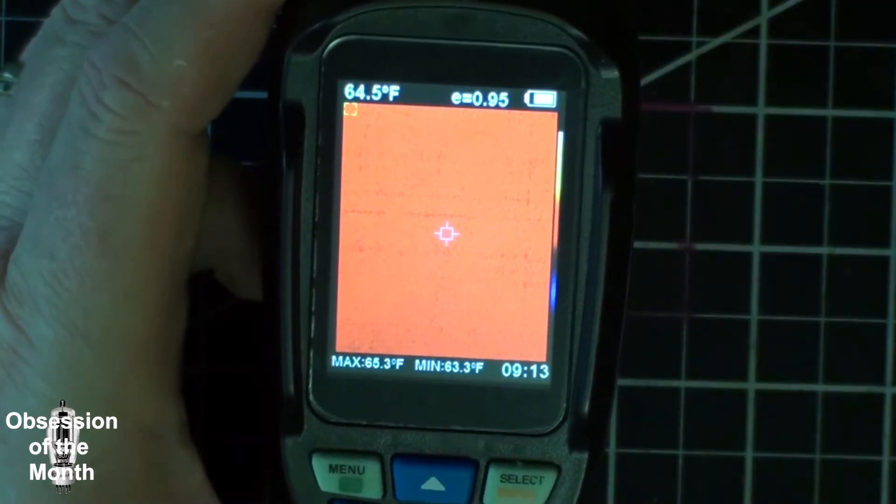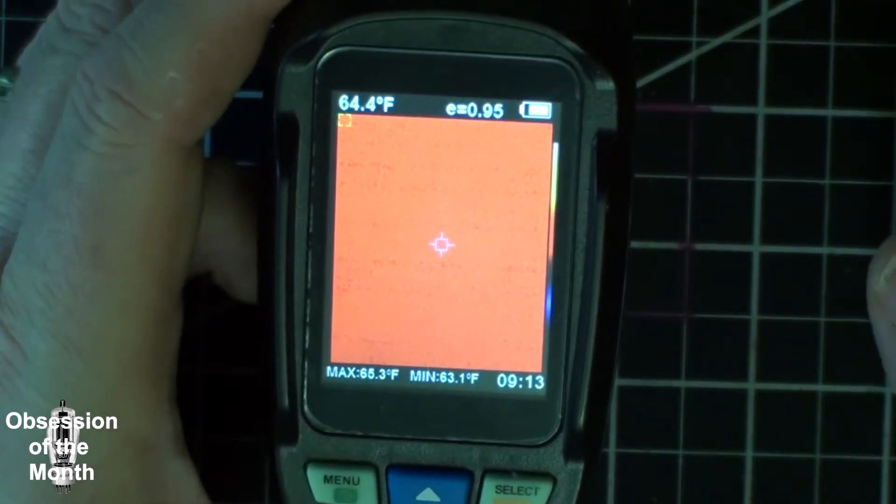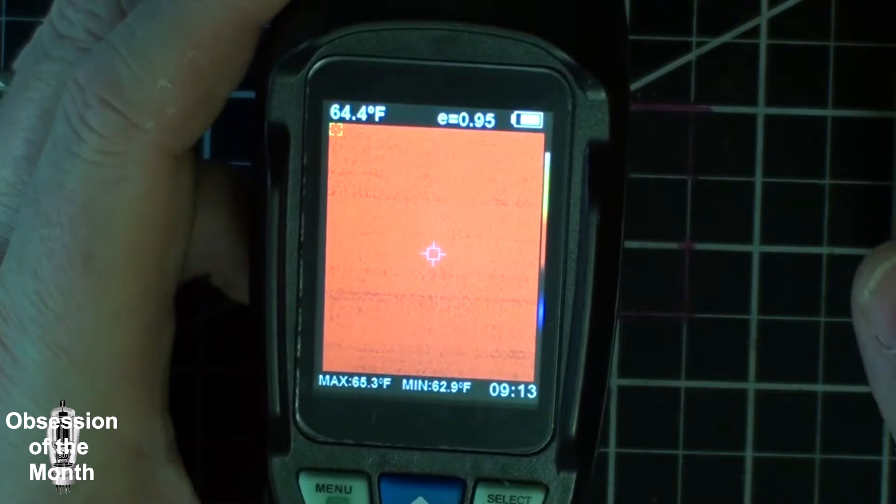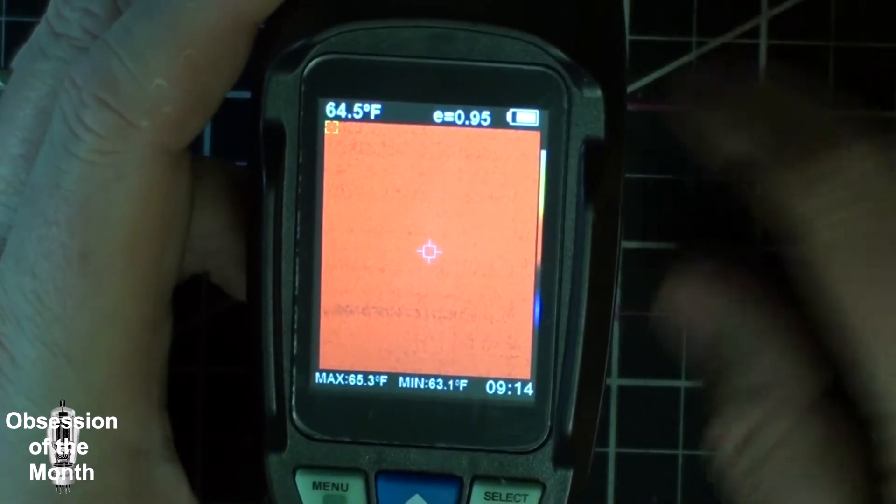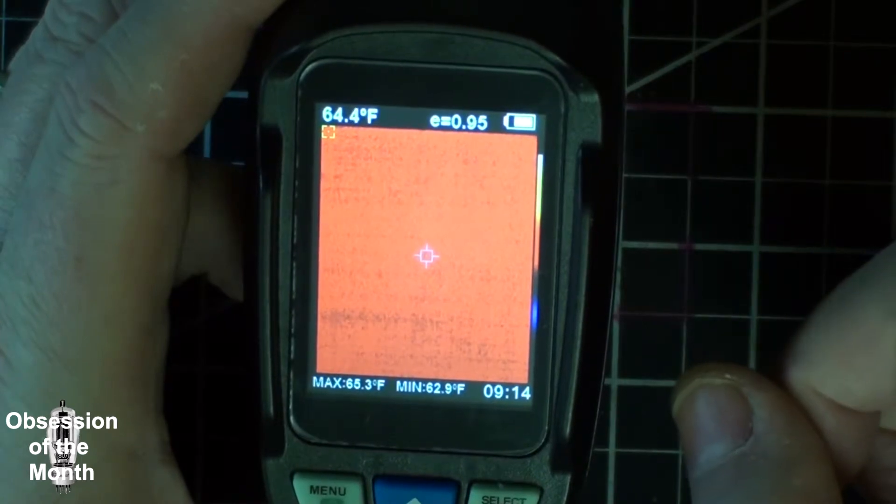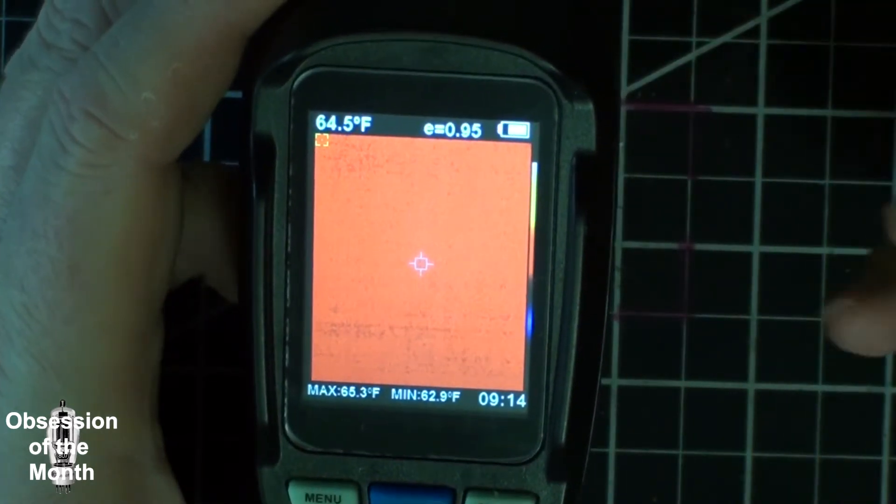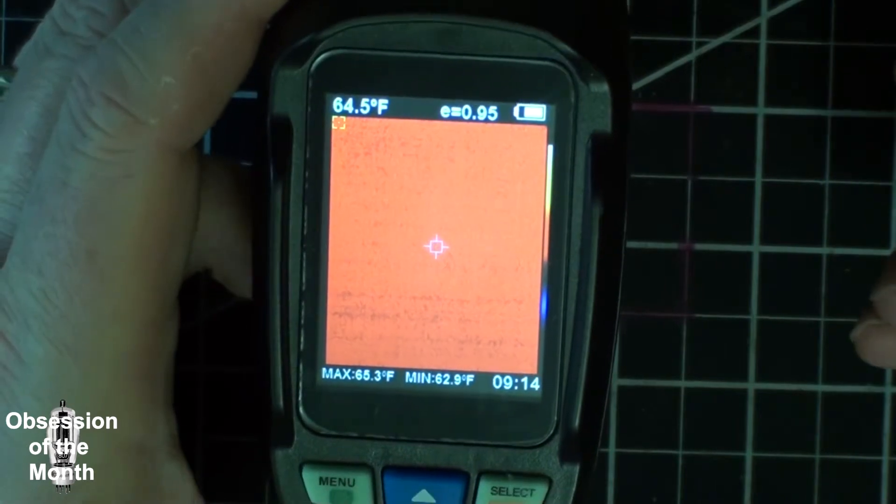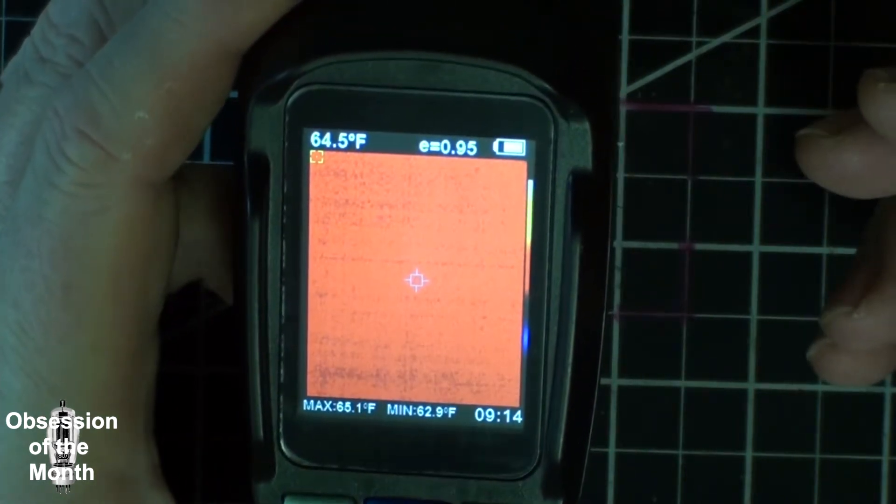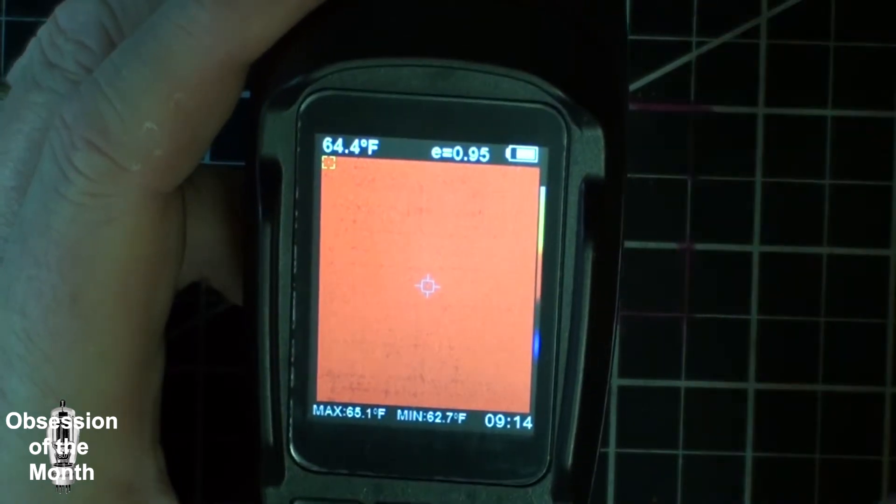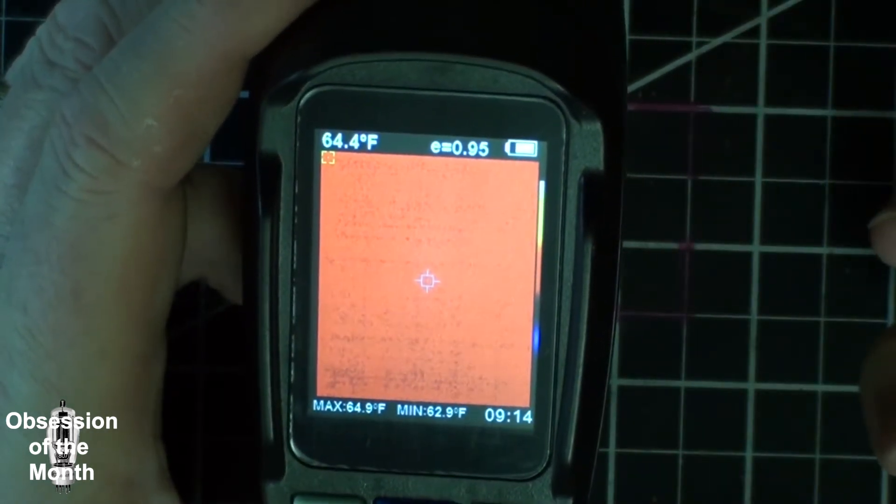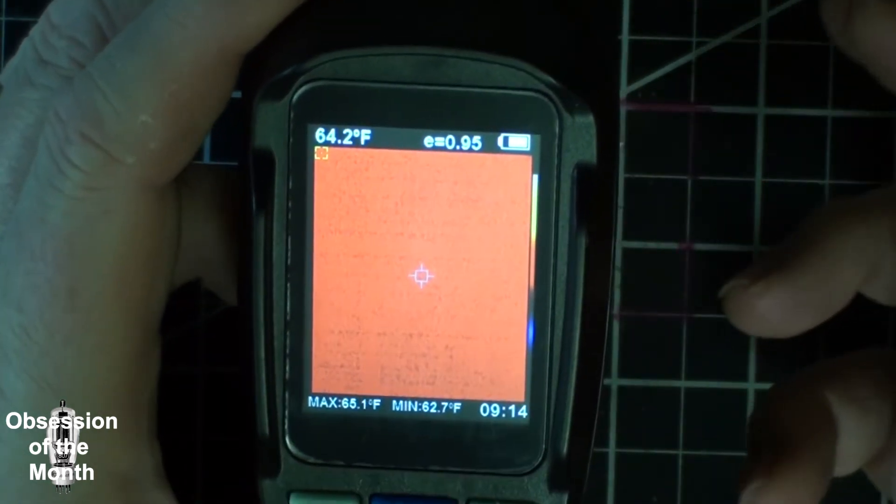You notice it says it's 64.5 degrees Fahrenheit. I am pretty much certain that it is not that temperature. You can mess with the emissivity. I don't know if there's any way to calibrate this, but I didn't really buy this for accuracy. I bought it mostly to be able to identify hot spots in electronics and other things.